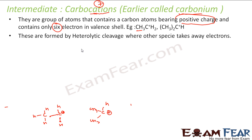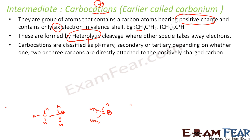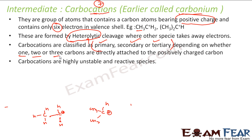Since the carbocation has a positive charge, it has to be formed by heterolytic cleavage. In homolytic cleavage, free radicals are formed. In heterolytic cleavage, one positive and one negative charge forms. The one which doesn't get an electron is the positive charge species. Carbocations are generally primary, secondary, or tertiary depending on whether you have one, two, or three carbons attached to the positively charged carbon.